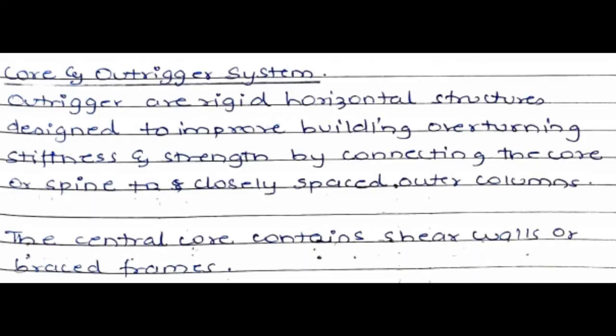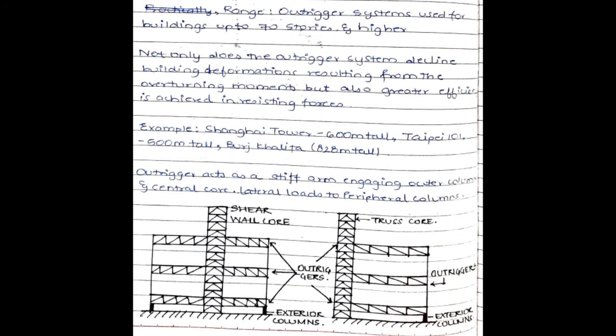Next, the core and outrigger system. Outriggers are rigid horizontal structures designed to improve the building's overturning stiffness and strength by connecting the core to closely spaced outer columns. The central core consists of shear walls or a braced frame. This system can be used for more than 70 storeys. The outrigger system not only reduces building deformations from the overturning moment but is also very efficient in achieving resisting forces against wind and seismic loads. Examples include the Shanghai Tower at around 600 meters, Taipei 101 at around 500 meters, and Burj Khalifa at 828 meters.